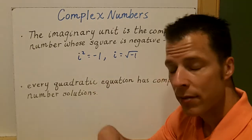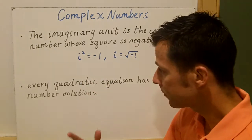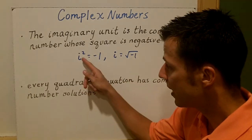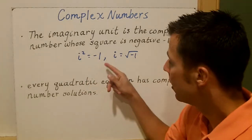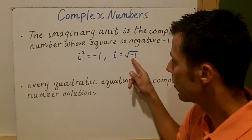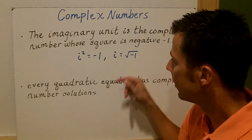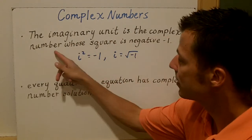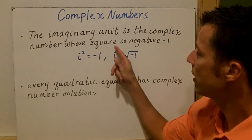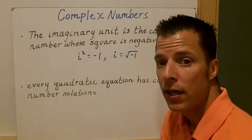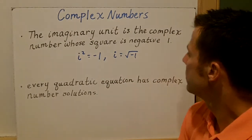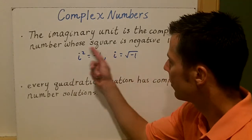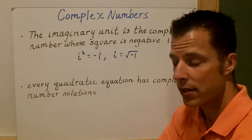So a complex number — a couple of things we need to consider — the big important rule here is that i squared is equal to negative one, and that means i is equal to the square root of negative one. So the imaginary unit is the complex number whose square is negative one. These are the two important things we're going to be talking about with complex numbers.